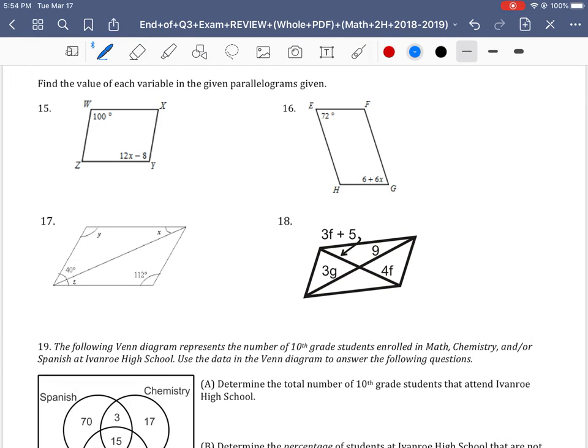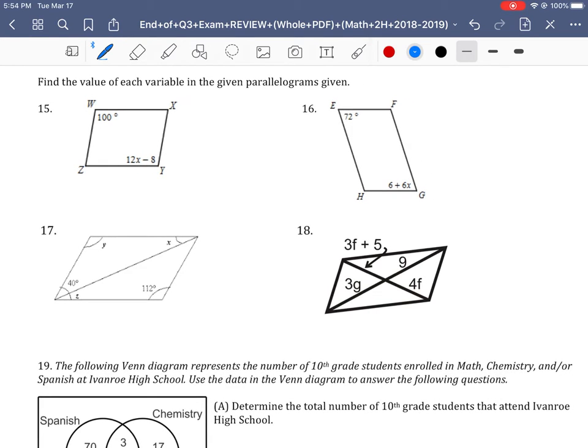We're just applying those properties looking at these four problems. On problem 15, we are given two opposite angles and we know that opposite angles have to be the same, they're congruent.